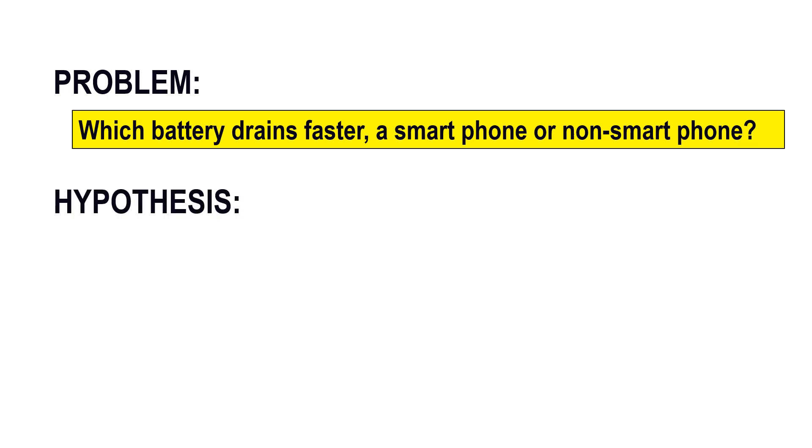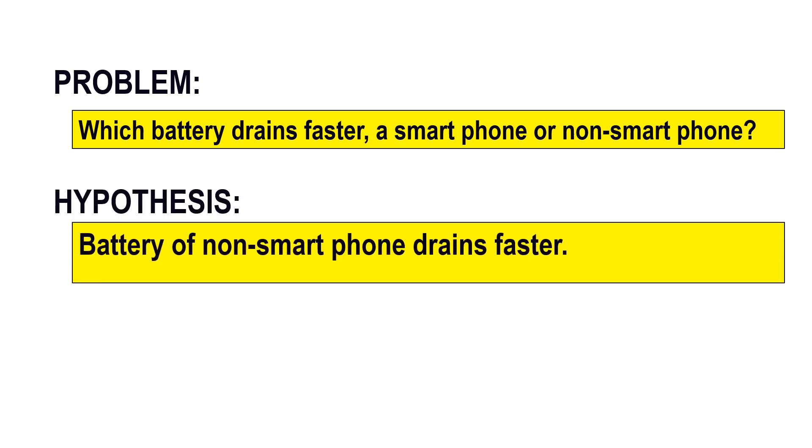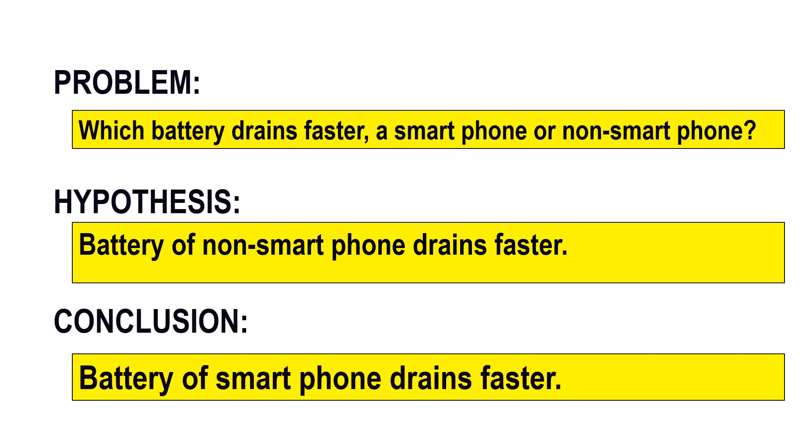battery of non-smartphone drains faster. After our experiment, we concluded that battery of smartphone drains faster. If you can see, the hypothesis is different from conclusion, which means our conclusion rejected our hypothesis. Also, our conclusion answered our problem.